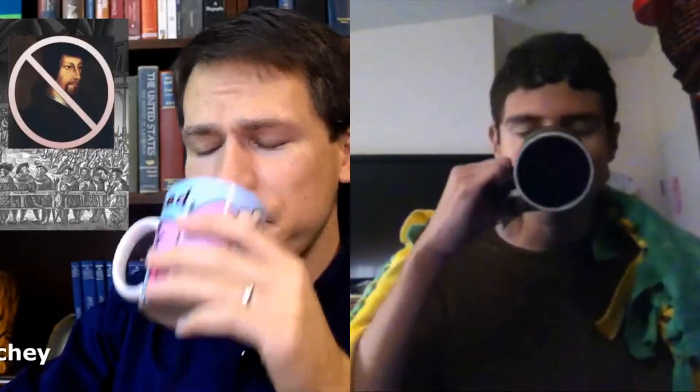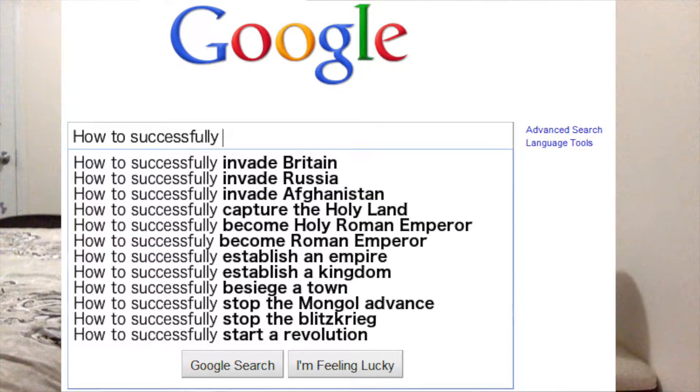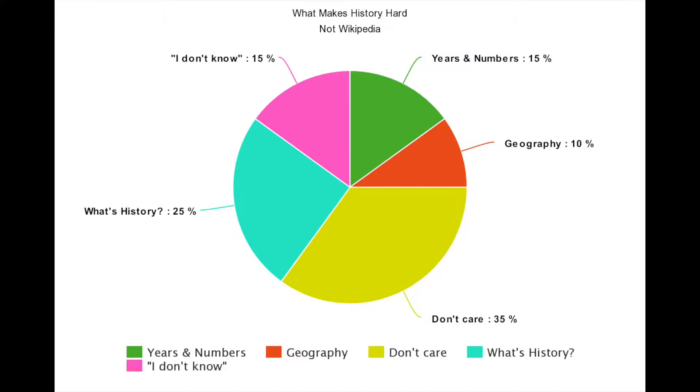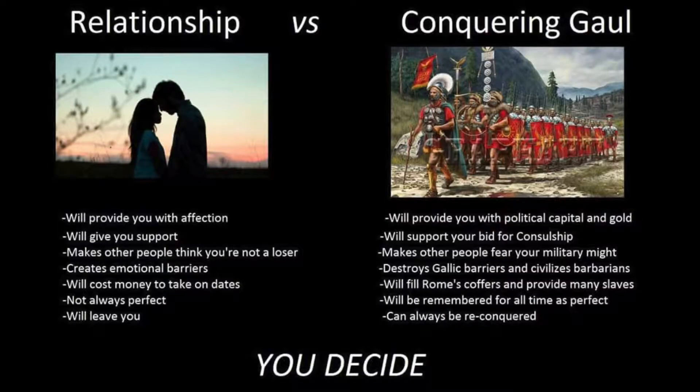Hello everyone, it's me, the teenage boy version of Tom Ritchie. I was going through my regular research about history and began asking myself: what makes it difficult to learn history? I embarked on a long journey, asking different people within my school, and ended up creating an elaborate pie chart. The only things of relevance were geography, years, and numbers — so that's what I'm going to focus on today: the different uses that numbers have in history, including years, Roman numerals, and other things regarding dating.